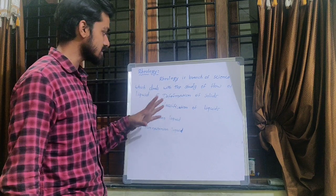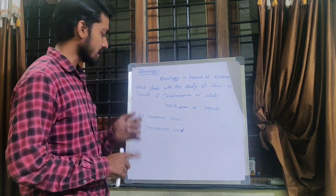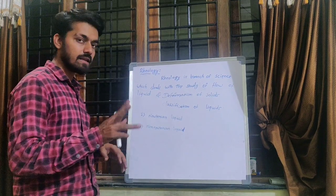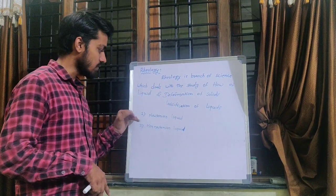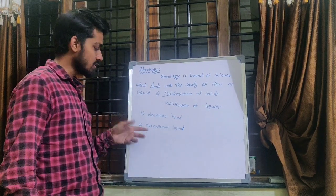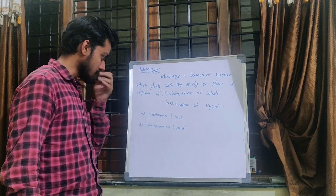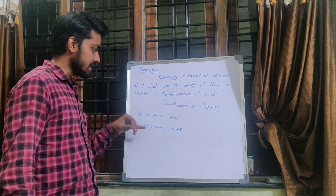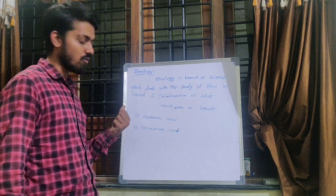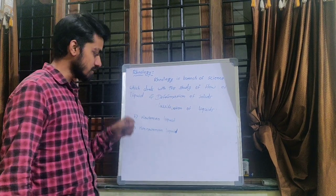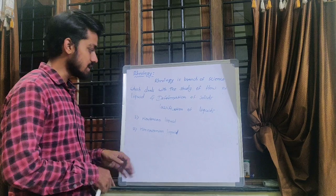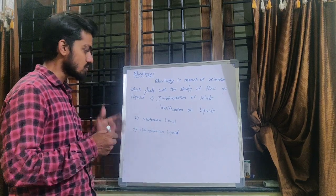First we are going to discuss the classification of liquid. Liquids are classified into mainly two types: first is Newtonian liquid and second is non-Newtonian liquid. A Newtonian liquid is a liquid which obeys Newton's law of flow, and a non-Newtonian liquid is one which does not obey Newton's law of flow.